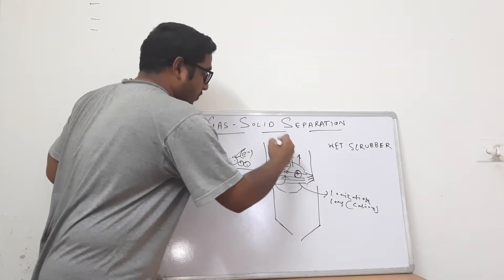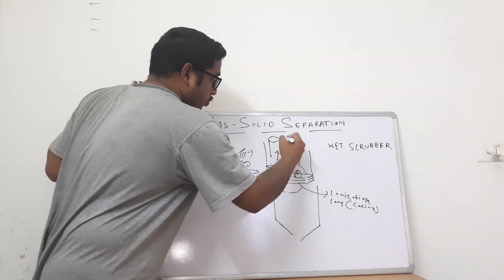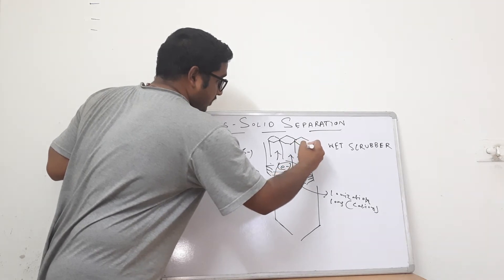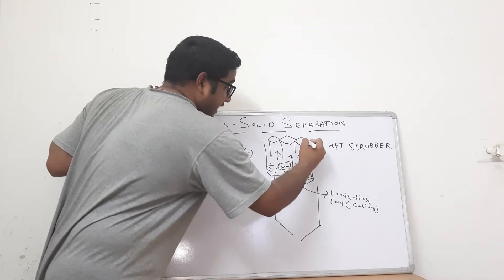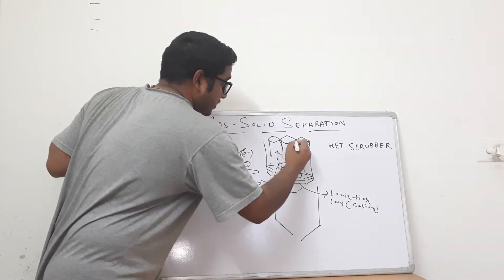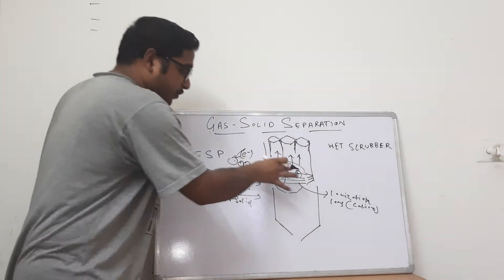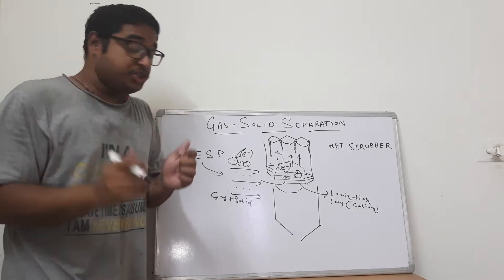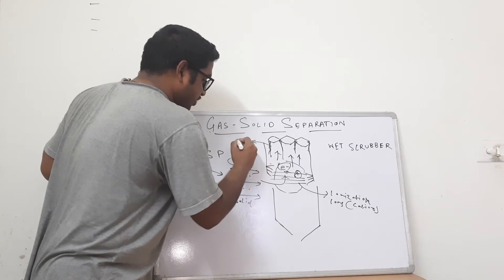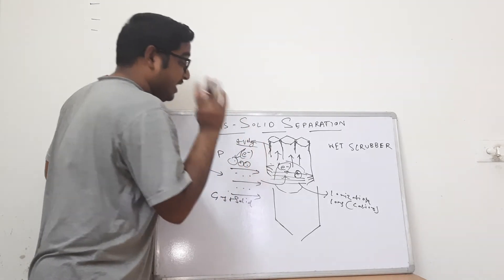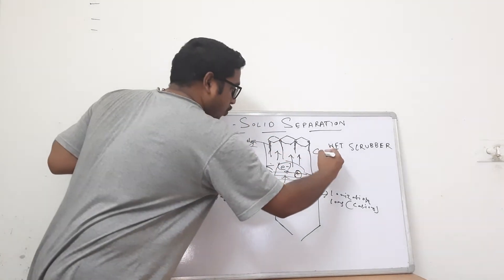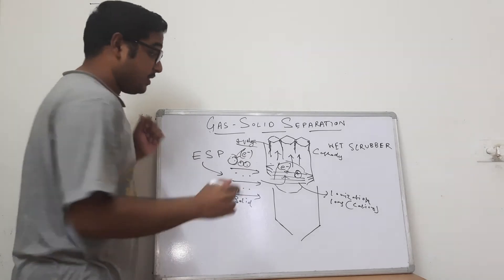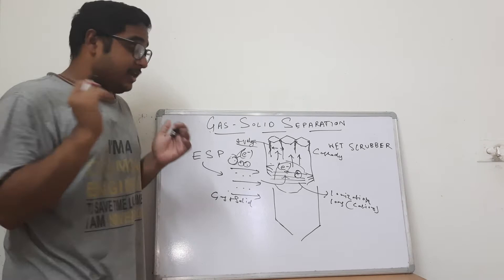As the gas travels up, there is a honeycomb-like hexagonal structure. The gases, after the electrons have been deposited on the solids, move through this honeycomb-like structure. The body of this structure has electrodes which are positively charged — these are cathodes in particular. The negatively charged solid particles, which have electrons deposited on their surface, get attracted to the surfaces of these electrodes.